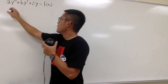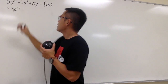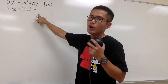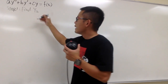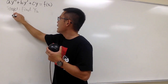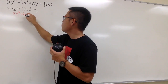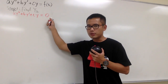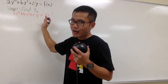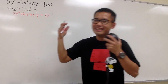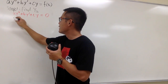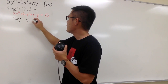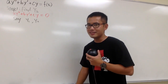Step one is to find yh — the homogeneous solution. This means we have to solve the equation ay'' + by' + cy = 0, the homogeneous situation. This is supposed to be easy to solve; you can just change that into the characteristic equation. Let's say the answers are y1 and y2.